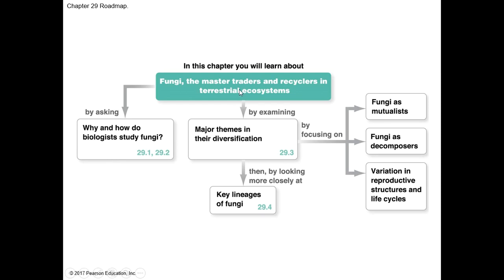We'll look at the major themes in their diversification, what the lineages are in terms of evolution, and we're going to focus on this by looking at fungi as mutualists — how they act to help other organisms like plants — fungi as decomposers, how they help the entire ecosystem, and the various types of variation that exist in their reproductive structures and life cycles.